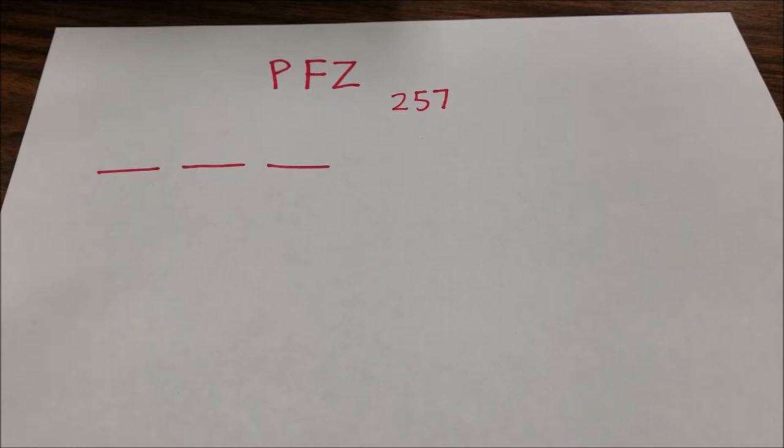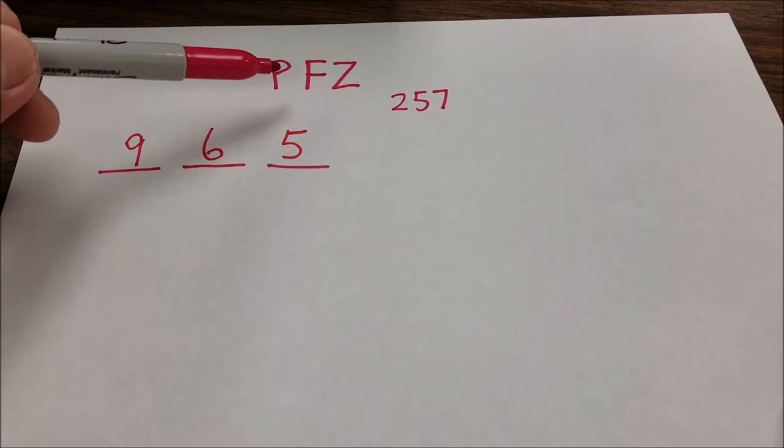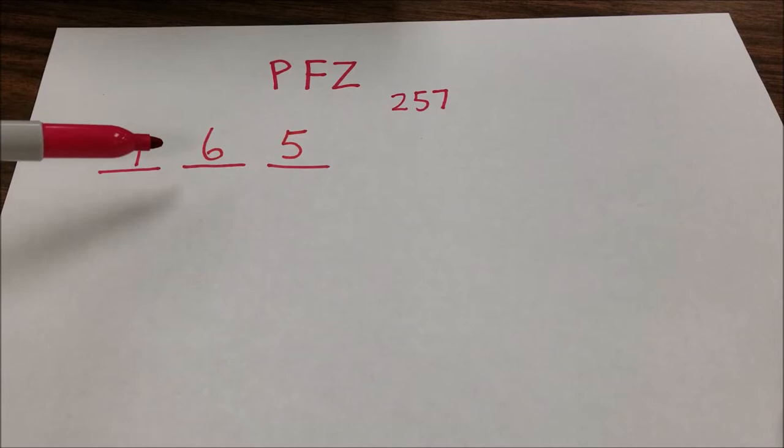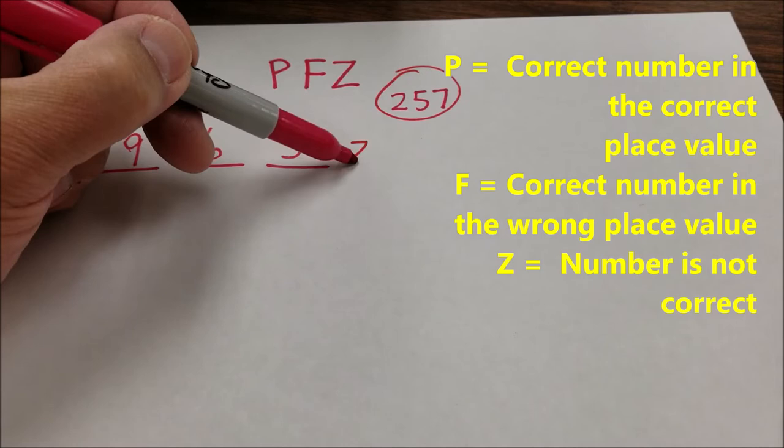Let's say the person says 965. So what you will do is you will use the letters of PFZ to let the person know, did they have the right, is the number even in the number? Is the number correct, but it's in the wrong place value? So let me show you this. So for 9, it's not even in the number. This is the number we want them to get. So for 9, they would get a Z. Z means the number is not even in the number.